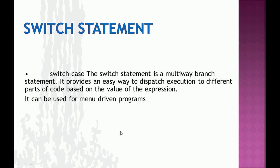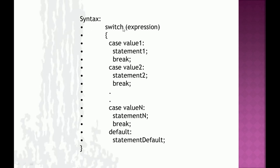Next we'll talk about the switch statement. The switch statement is basically a multi-way branch statement, mainly used for menu-driven programs to execute different parts of code based on the value of an expression. It has cases defined inside, and based on the cases the statements get executed. If the expression equals case value 2, the control goes directly to case 2. If none of the cases satisfy, the control moves to the default case and whatever statement is inside default gets executed.